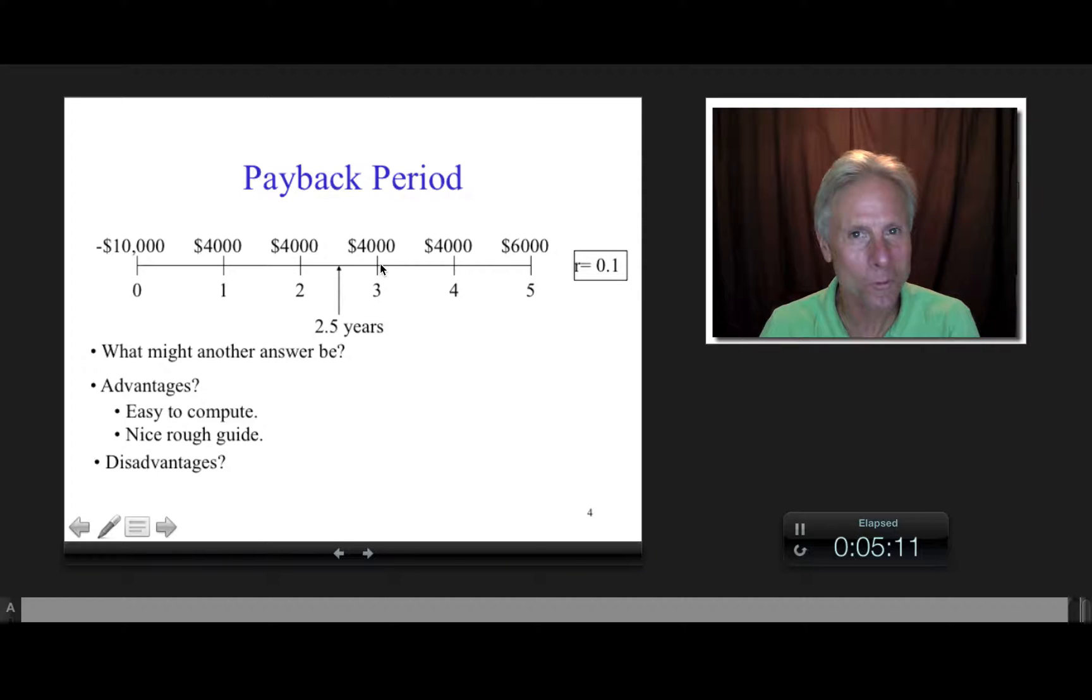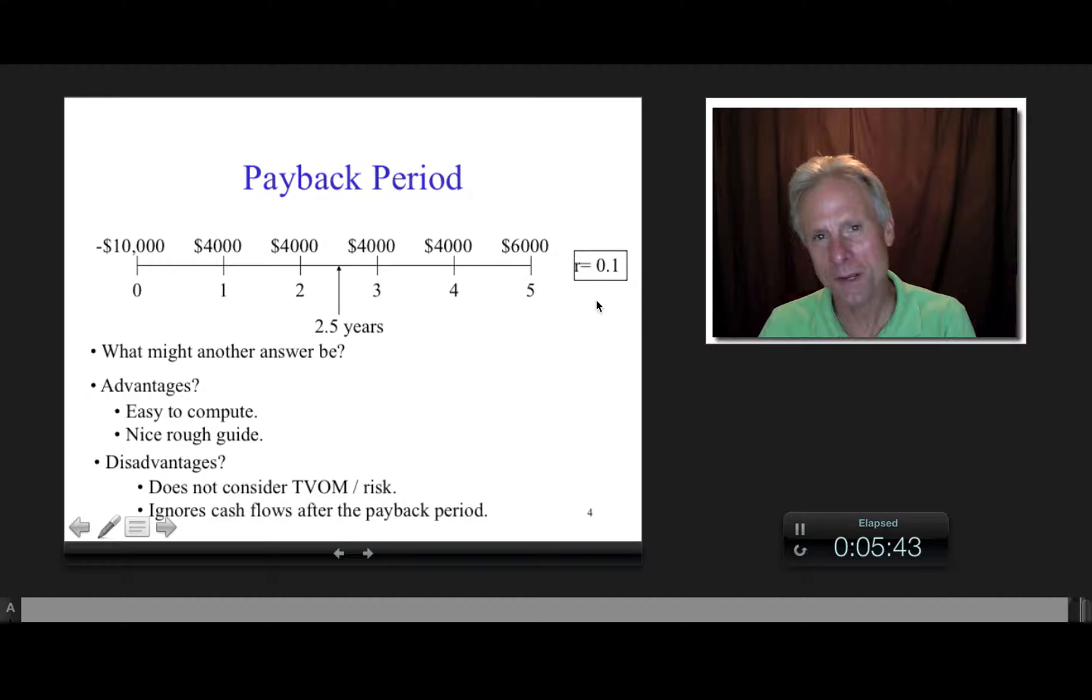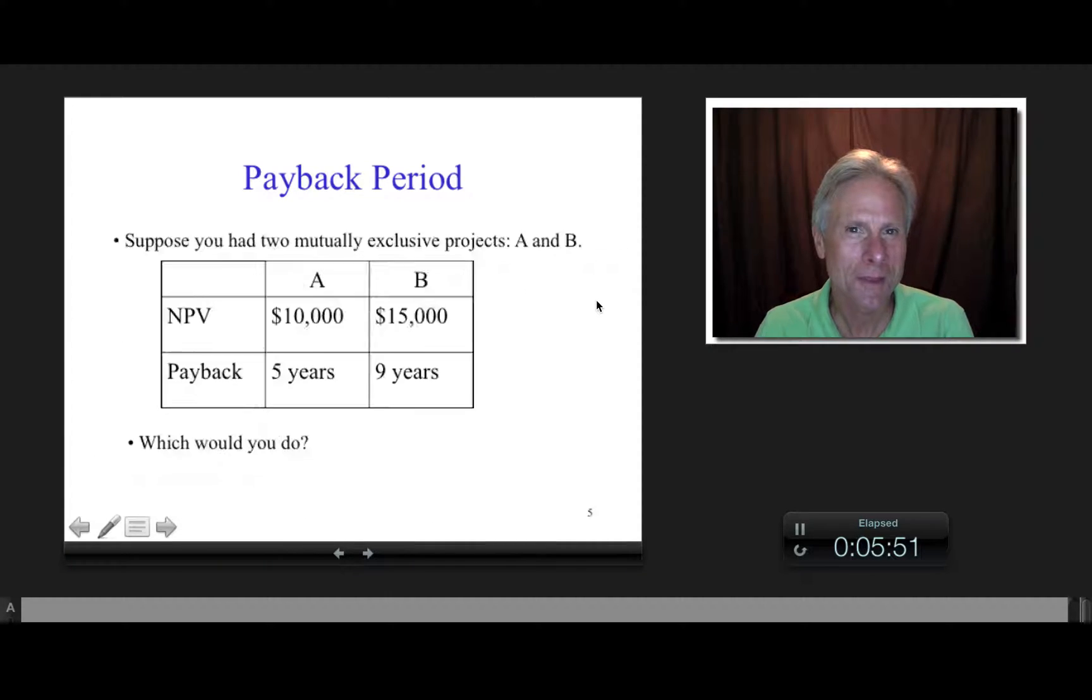But on the other hand, is it ignoring some pretty fundamental stuff? It is, right? So for example, is it ignoring any risk? Yeah, it's ignoring time value money and risk. Is that a big deal? Well yeah, that's a huge deal, right? And what if I told you that the payback period was two and a half years? Would that provide any information about cash flows that happen after the two and a half years? It wouldn't, right? So from that perspective, you could argue that it's a relatively limited statistic, but still a nice rough guide, good back of the envelope calculation.